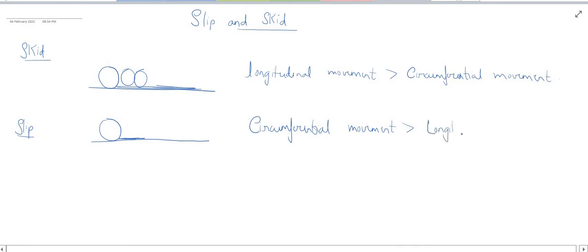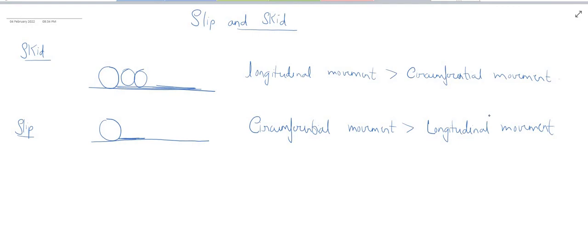So these were the two cases — slip and skid. I hope the concept of slip and skid is clear. To summarize: skid always happens when the wheel slides without revolving, and the path traveled by the wheel along the road surface is more than the circumferential movement of the wheel. Slip occurs when the wheel revolves more than the corresponding longitudinal movement along the road.